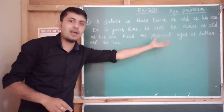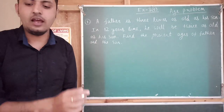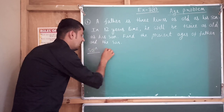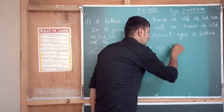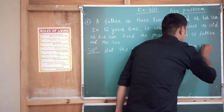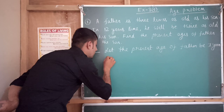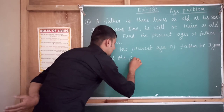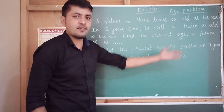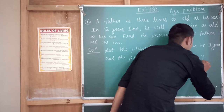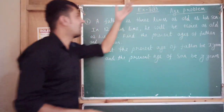They have asked you to find out the present age of the father and the son. So you start with the present age solution. Let the present age of the father be x years and the present age of the son be y years. Our aim is to find out what is x and what is y, so we will try to form the equations.